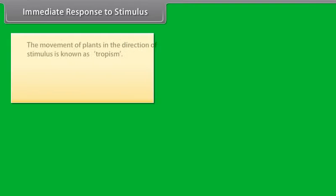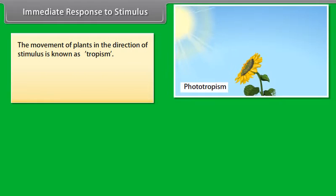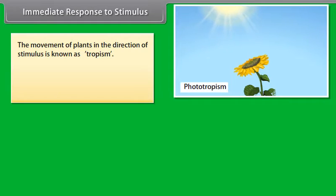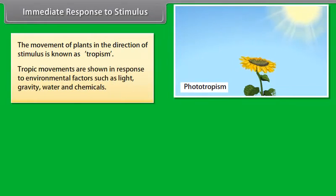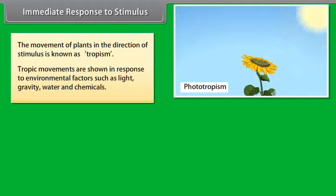The movement of plants in the direction of stimulus is known as tropism. Tropic movements are shown in response to environmental factors such as light, gravity, water and chemicals.